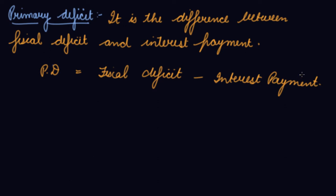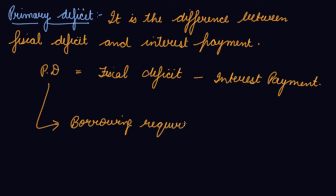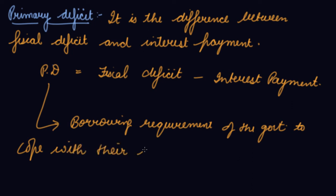Your fiscal deficit shows the borrowing requirements of the government to meet the expenditure, inclusive of interest payments — meaning the borrowing requirement includes the interest payment that has to be made on the borrowings. But the primary deficit shows the borrowing requirement of the government to cope up with the expenditures excluding interest payments.